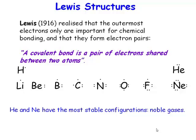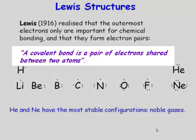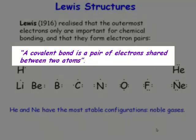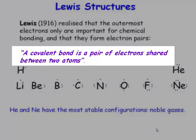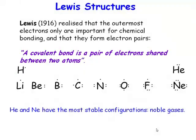The only electrons that are important in atoms are the outermost, or valence, electrons. The chemical bond consists of a pair of electrons. So when chemical bonds form, they form through the sharing of electrons between two atoms.